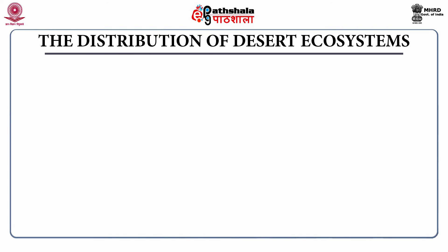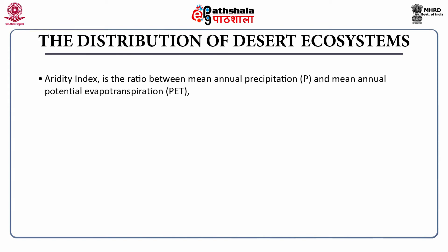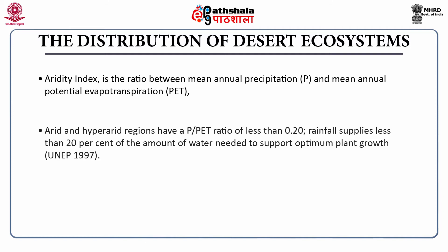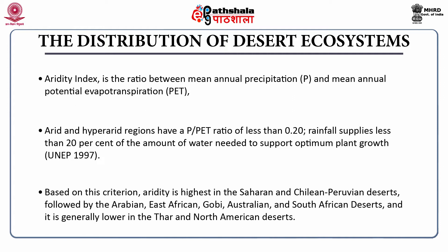The distribution of desert ecosystems — the aridity index is the ratio between mean annual precipitation and mean annual potential evapotranspiration. Arid and hyperarid regions have a P/PET ratio of less than 0.20, meaning rainfall supplies less than 20% of the water needed to support optimum plant growth. Based on this criteria, aridity is highest in the Saharan and Chilean-Peruvian deserts, followed by Arabian, East African, Gobi, Australian and South African deserts.